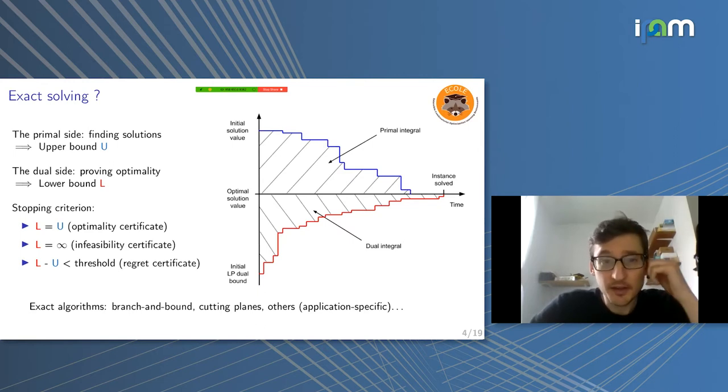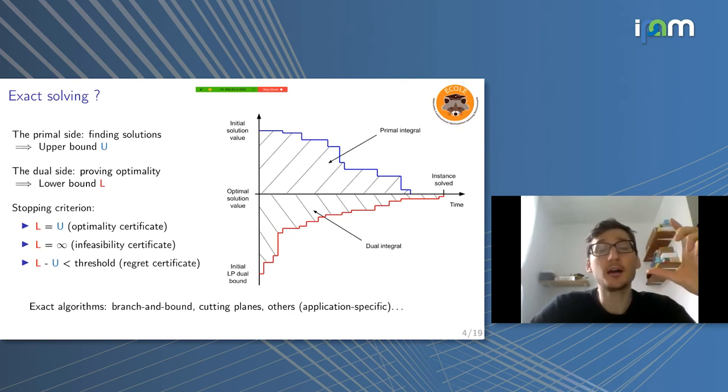On the other side, some algorithms allow you to get lower bounds on your optimization problems. For example, if you solve a linear programming relaxation, you get a lower bound. You know that there is no feasible solution better than that bound. Basically, an exact solver provides you those two things: an upper bound on the primal side and the lower bound on the dual side. And it's going to refine those bounds over time.